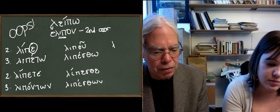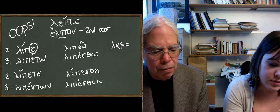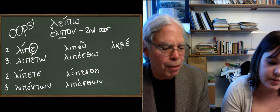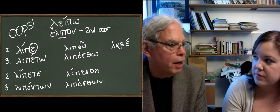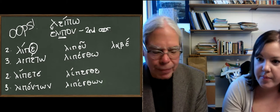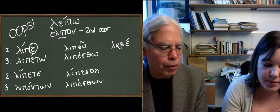Lambano has a second singular imperative, labe, which is the older form. You may remember that there are some second aorist forms which keep the accent on the thematic vowel, right? And so it reflects a very old tradition.